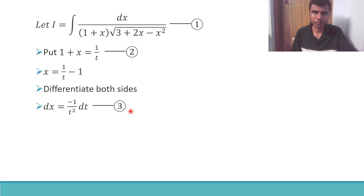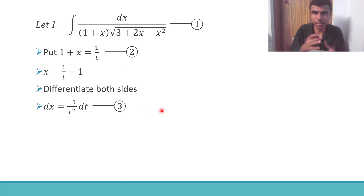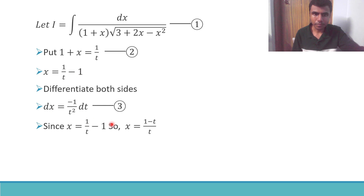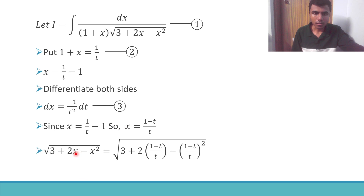Don't substitute things directly just yet, because the term under root (3 plus 2x minus x squared) requires some good amount of work. Instead, I recommend you first simplify that expression in terms of t. Since x is (1 by t) minus 1, we get x equals (1 minus t) by t. So substitute: 3 plus 2 times (1 minus t)/t minus [(1 minus t)/t] squared.